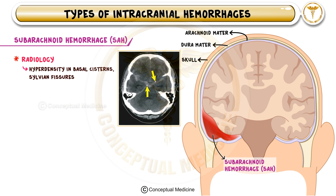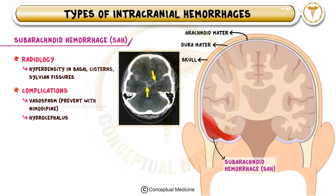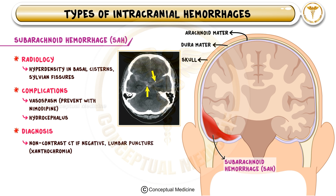On CT scan, SAH appears as hyperdensity in the basal cisterns and sylvian fissures. If CT is negative but SAH is still suspected, lumbar puncture is performed to look for xanthochromia, which indicates old blood in the CSF. A serious complication of SAH is vasospasm, which can lead to delayed cerebral ischemia; this can be prevented with nimodipine, a calcium channel blocker. Management of aneurysmal SAH includes endovascular coiling or surgical clipping of the aneurysm to prevent re-bleeding.